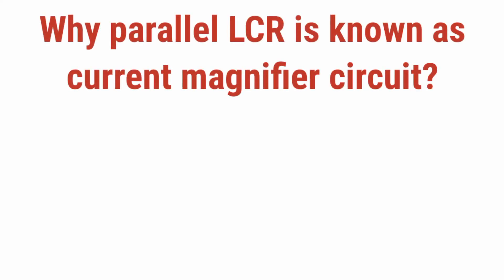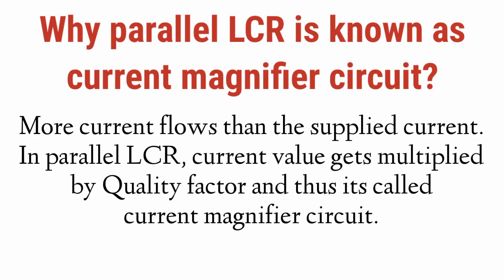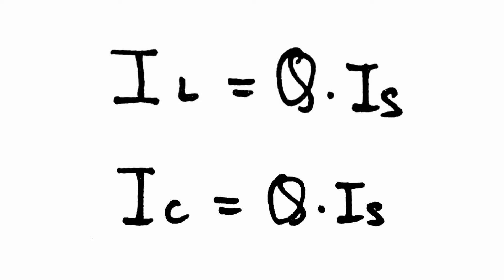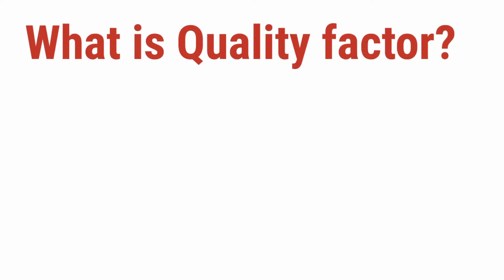Why is the parallel LCR known as a current magnifier circuit? When more current flows than the supplied current, current magnification has occurred. In a parallel LCR, current values get multiplied by the Q factor — for I_L we get Q times I_s, and for I_C we also get Q times I_s.